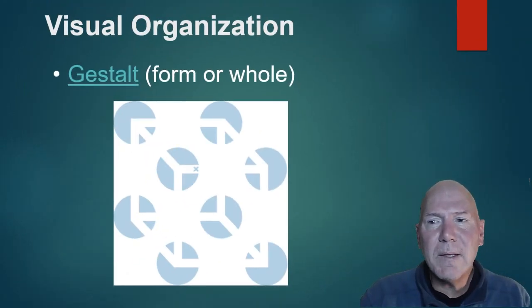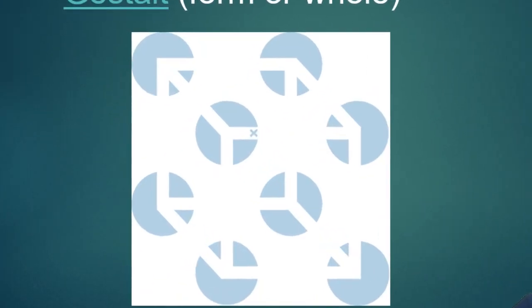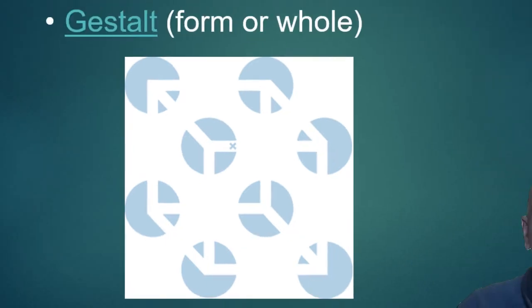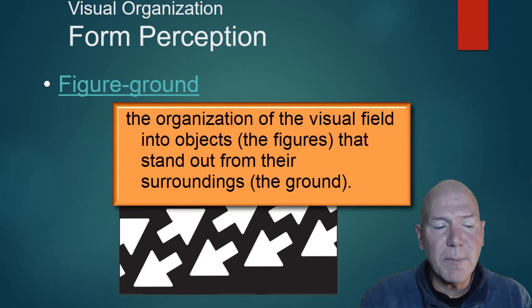Gestalt is the branch of psychology that looks at perception and organization. Its credo is that the whole is greater than the sum of its parts. For example, looking at a Necker cube, we're actually seeing eight circles with pieces cut out, but our brain wants to turn it into a box. Figure-ground refers to distinguishing the figure — what we're looking at — from the background. A pen on a desk: the pen is the figure, the desk is the ground.